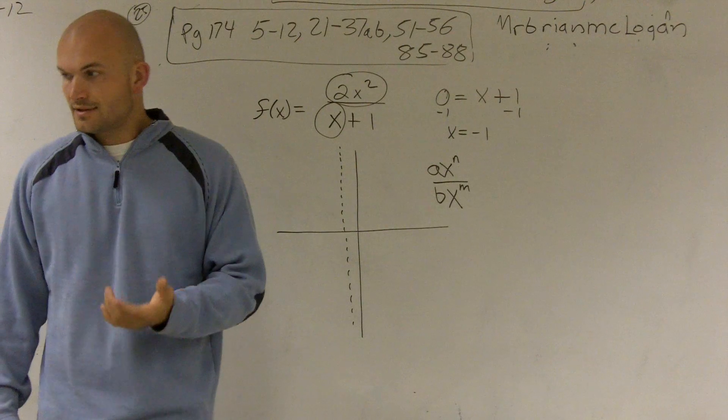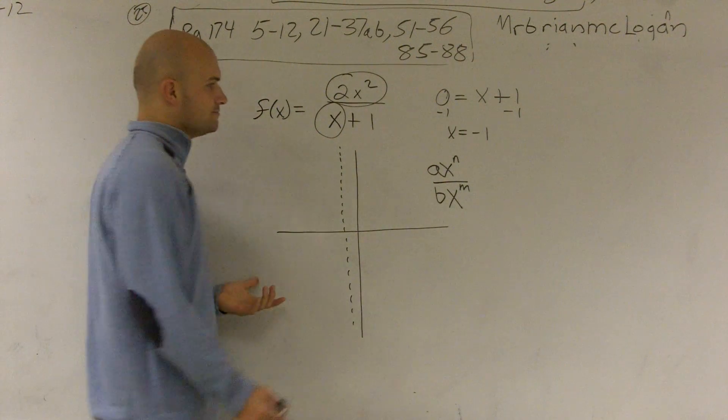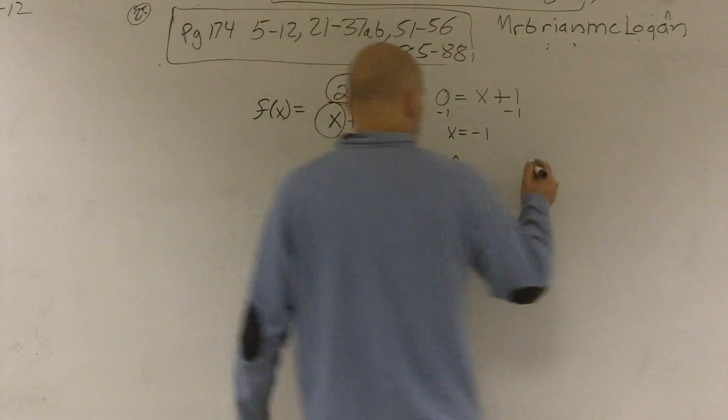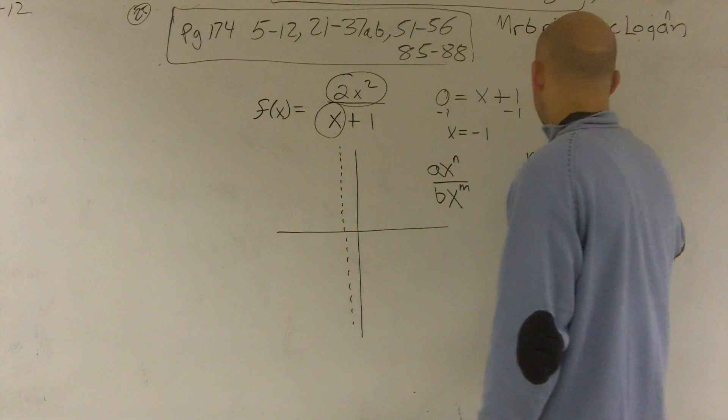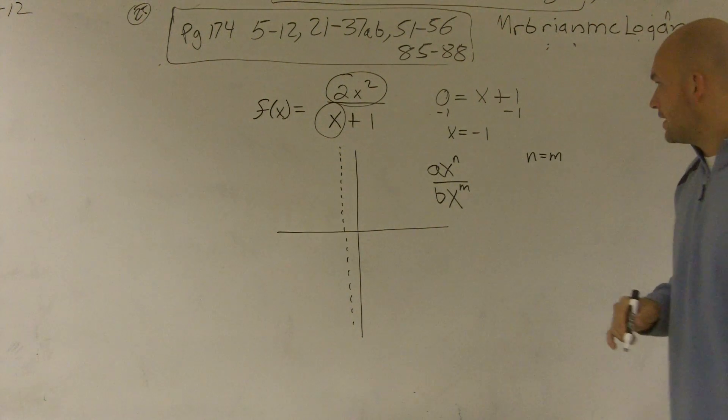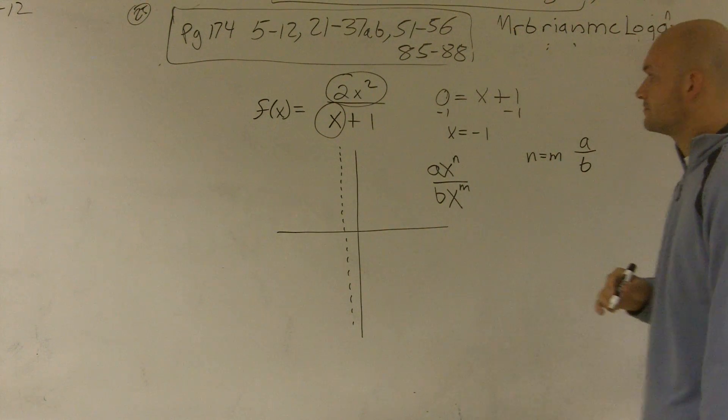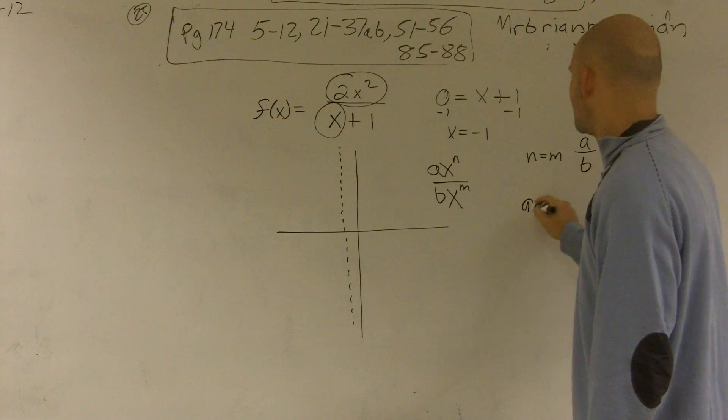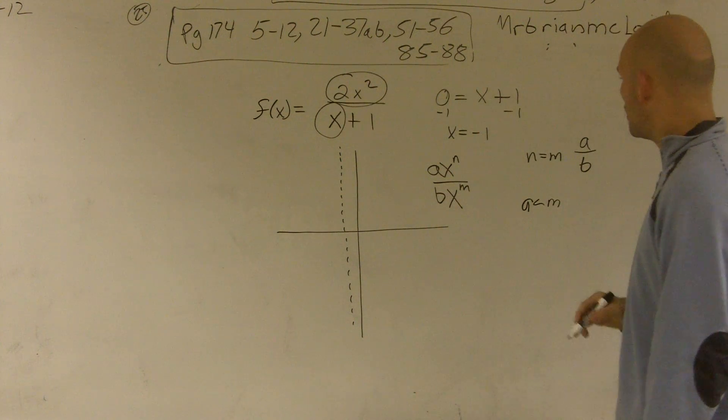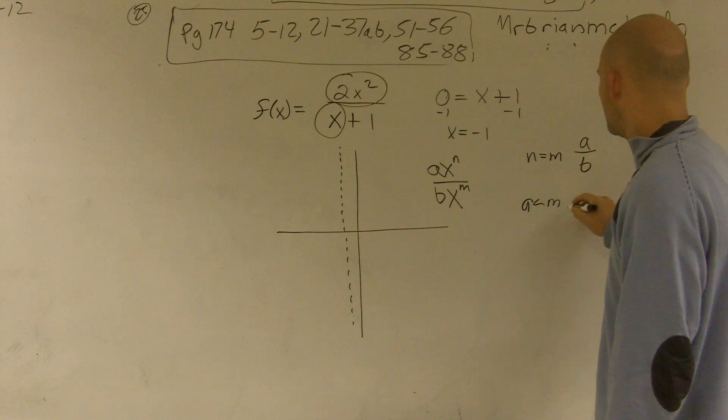Now there's rules that are in your outline that you can use to follow. When you have n equal to m, our horizontal asymptote is a over b. When n is less than m, our horizontal asymptote is equal to zero.